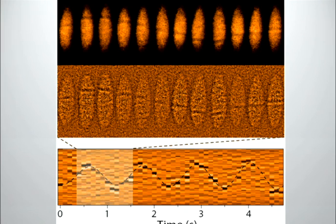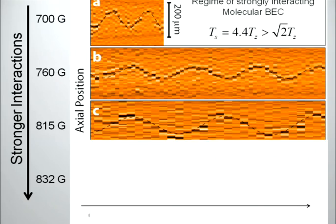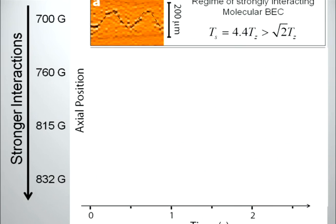We take images, subtract an average of the cloud, and follow the soliton evolution over many seconds — almost approaching the lifetime of the fermionic superfluid. Now the big question: what happens as a function of interaction strength? In the BEC regime at 700 Gauss, instead of sqrt(2) times the trapping frequency, we get 4.4 times the bare atomic frequency. That means the effective mass enhancement m*/m is 4.4 squared — already huge and much larger than 2. This is a nice way to study strongly interacting Bose gases: pair fermions into molecules to get a strongly interacting BEC.